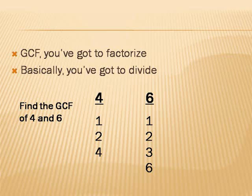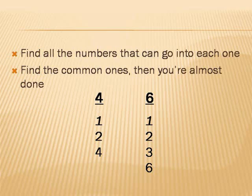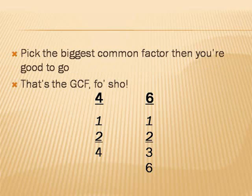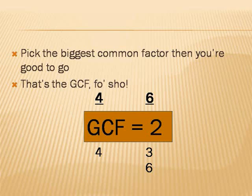GCF, you've got to factorize. Basically, you've got to divide. Find all the numbers that can go into each one. Find the common ones, then you're almost done. Pick the biggest common factor, then you're good to go. That's the GCF, for sure.